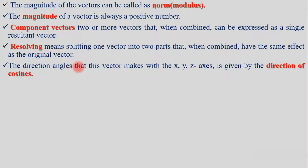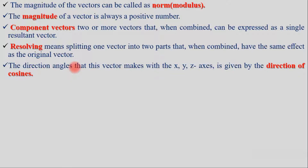Direction angles are the angles that a vector makes with the positive x-axis, y-axis, and z-axis. The cosine values of those angles are called direction cosines.